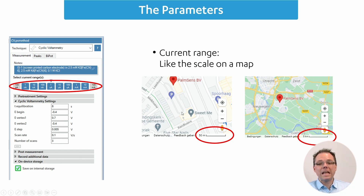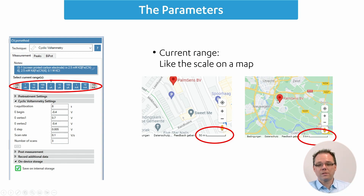But we cannot see any of the neighboring cities of Houten where we're located. If we zoom out and have a scale bar of 5 kilometers, we can nicely see that Utrecht and Zeist are around the corner, but we can no longer see properly in which street we would be located. This is how the current range works: if it's selected too high, you don't get proper resolution; if it's set too low, the current cannot reach the values it needs to.